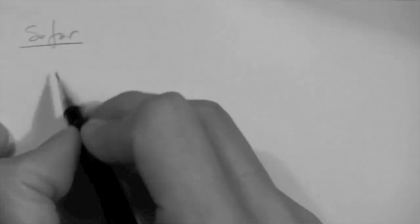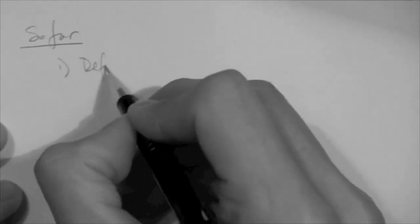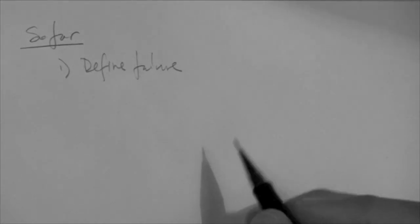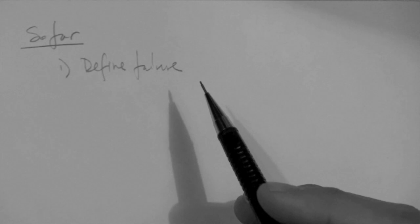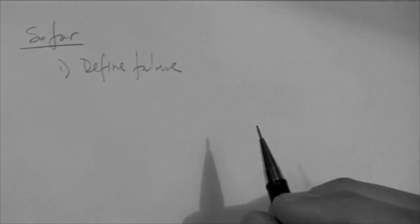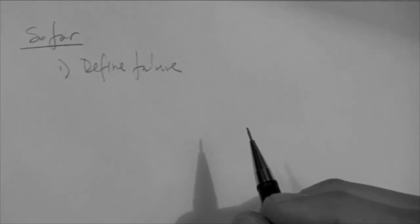Okay, so let's make a summary of what we have done so far. Number one, we have defined failure. It's important to realize that we have made the decision to define failure based on what we expect failure to be.